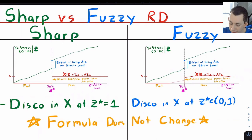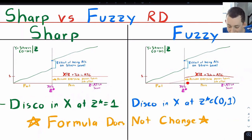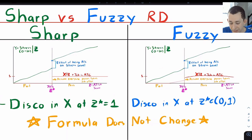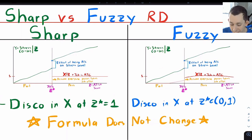In a fuzzy RD, maybe if you just barely fail the ATSA — say you get a 68 — the FAA still finds a way to offer you a job. Very few people have this option, so your expected treatment status at a score of 68 might be 0.25, not one. Conversely, someone who scores a 72 might not be sure they want the job, so not everyone who just barely passes actually becomes an air traffic controller. The jump in treatment at the threshold is not from zero to one, but something in between — and that's how you know it's a fuzzy RD. In both cases, the RD estimate is still the discontinuity in Y over the discontinuity in X at the threshold.